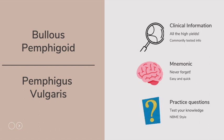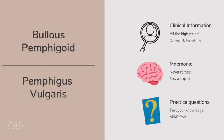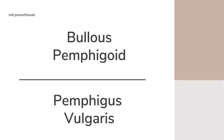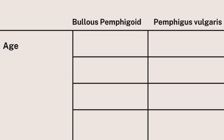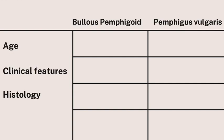So let's focus on the comparisons between bullous pemphigoid and pemphigus vulgaris. When comparing these two diseases, we can break it down into these categories: age, clinical features, histology, and what we see on immunofluorescence.